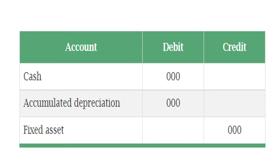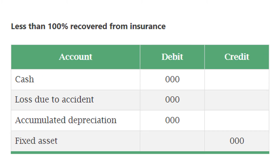Let's look at how the entry would look when it is less than 100% recovered from insurance. You would note that 'loss due to accident' is an expense account that the company needs to recognize for the remaining loss value of the destroyed asset that is not covered by the insurance company.